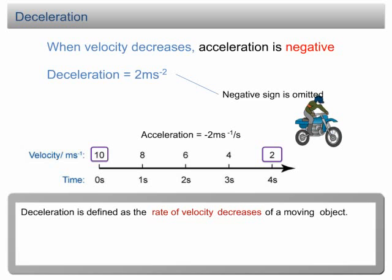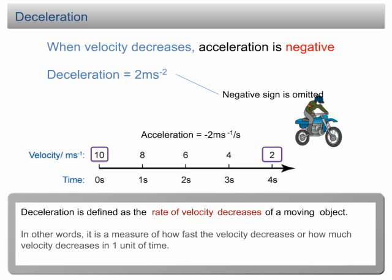Deceleration is defined as the rate of velocity decrease of a moving object. In other words, it is a measure of how fast the velocity decreases or how much velocity decreases in one unit of time.